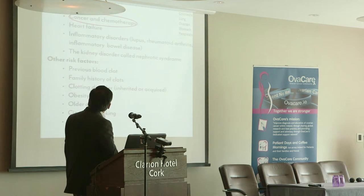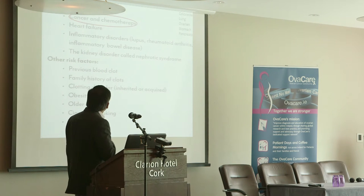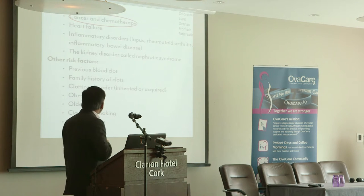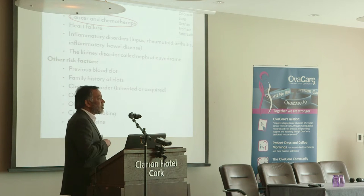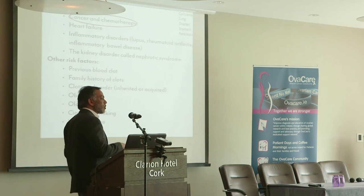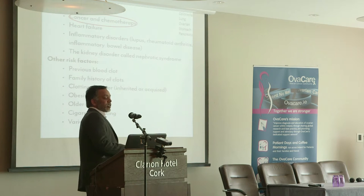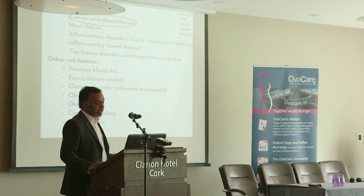Other factors include previous history of blood clotting, family history of clotting, clotting disorders, obesity or increased body weight, old age, cigarette smoking, and varicose veins. Varicose veins are the prominent veins on the legs — if you have those, you are at increased risk of developing a clot.